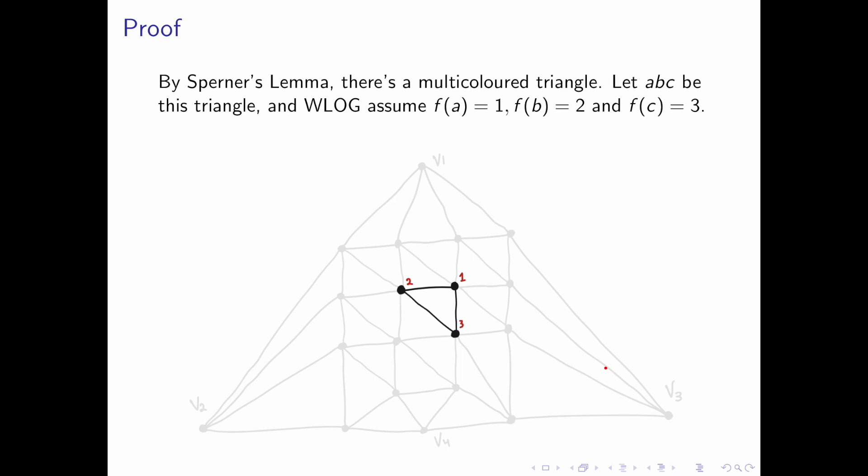Sperner's lemma states that we have a multicolored triangle. We'll let ABC be this triangle and assume f of A equals 1, f of B equals 2, f of C equals 3.